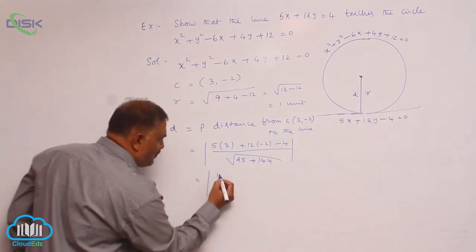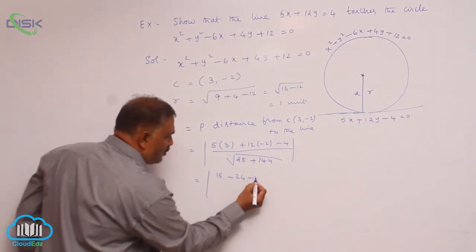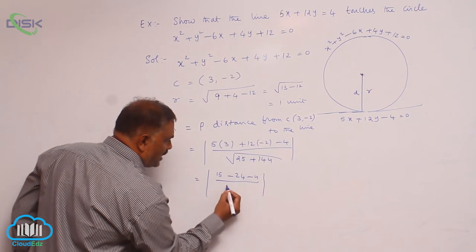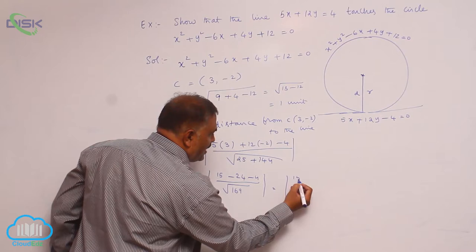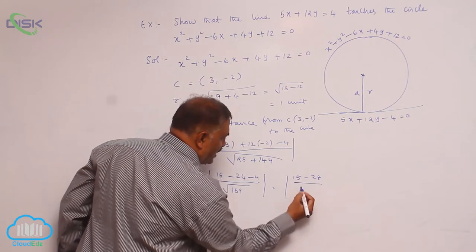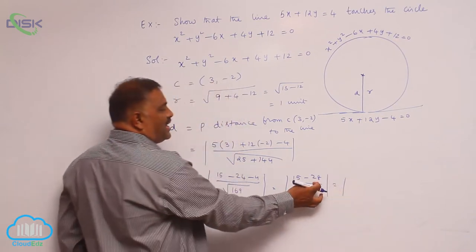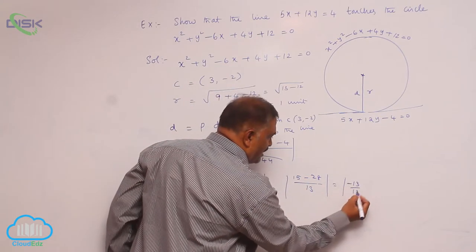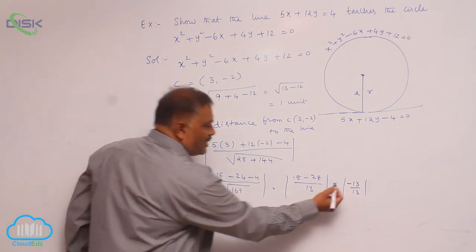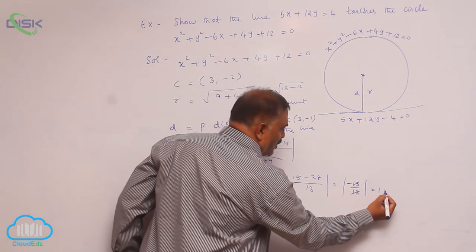Now this is 15 minus 24 minus 4 divided by root of 169. This is 15 minus 28 by 13. Now this is 28 minus 15 is minus 13 divided by 13. Because modulus is there, you can cancel off. This is equal to 1 unit.